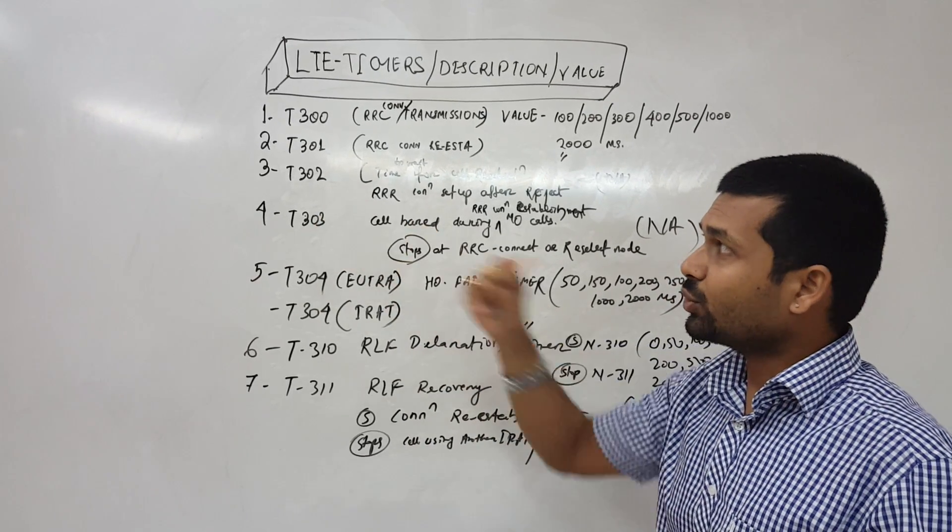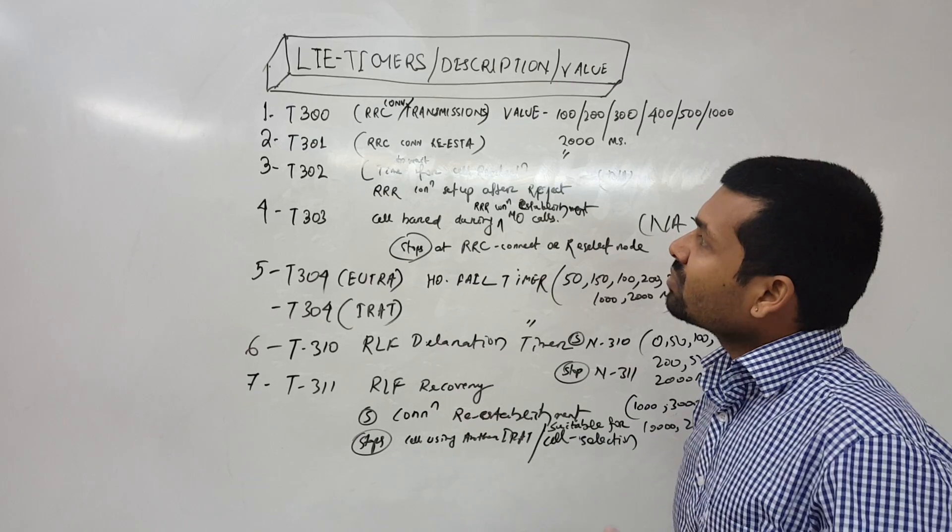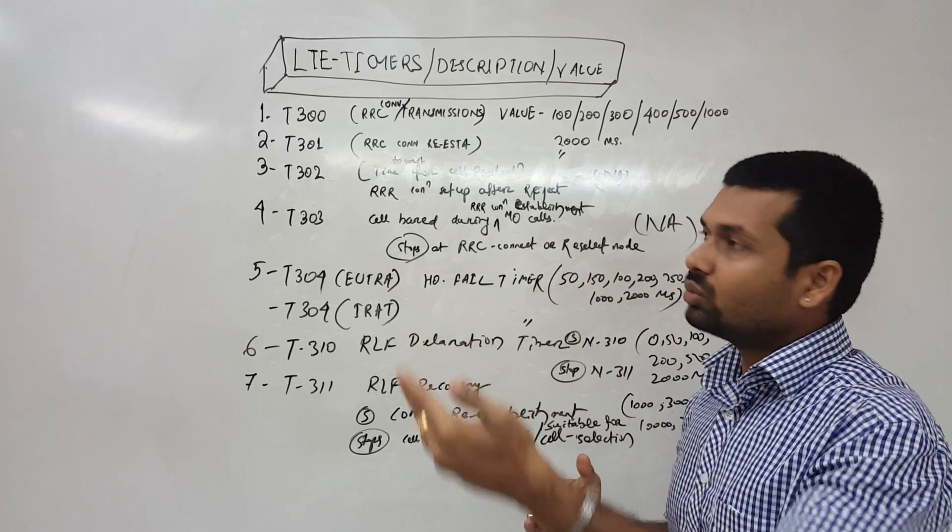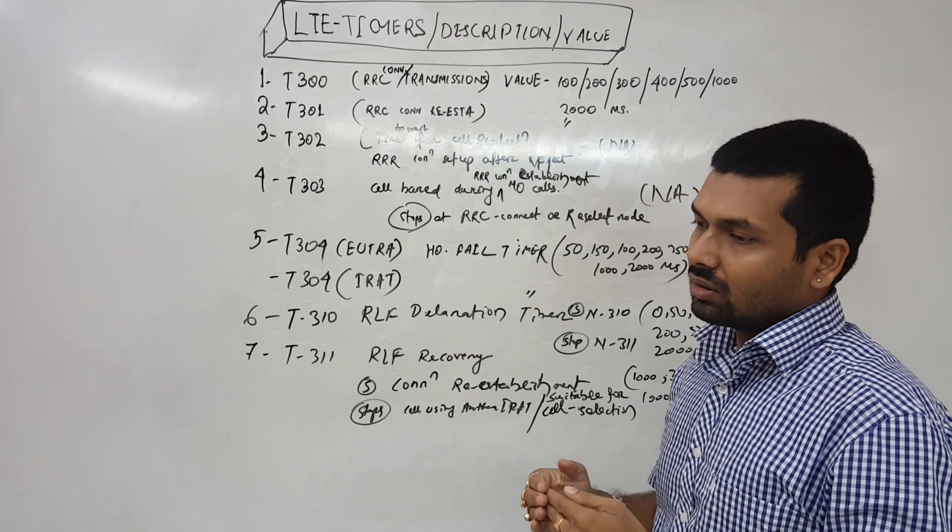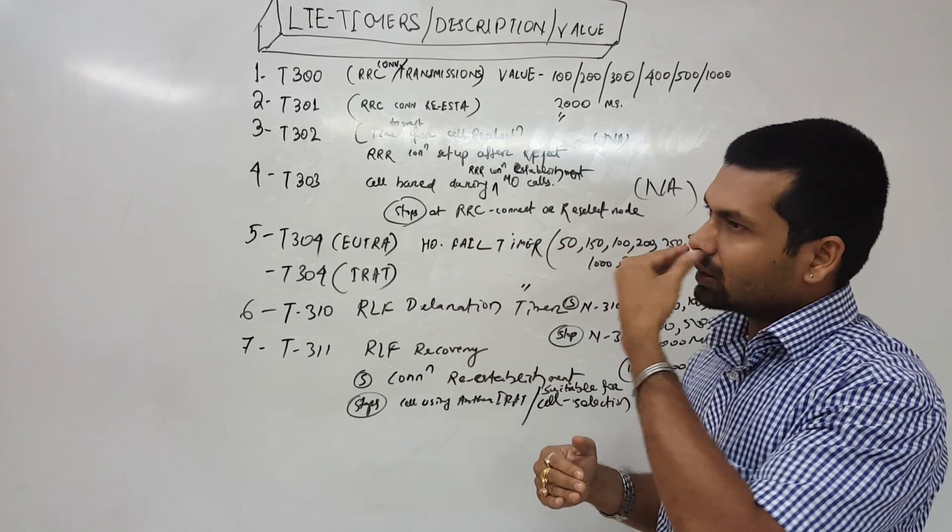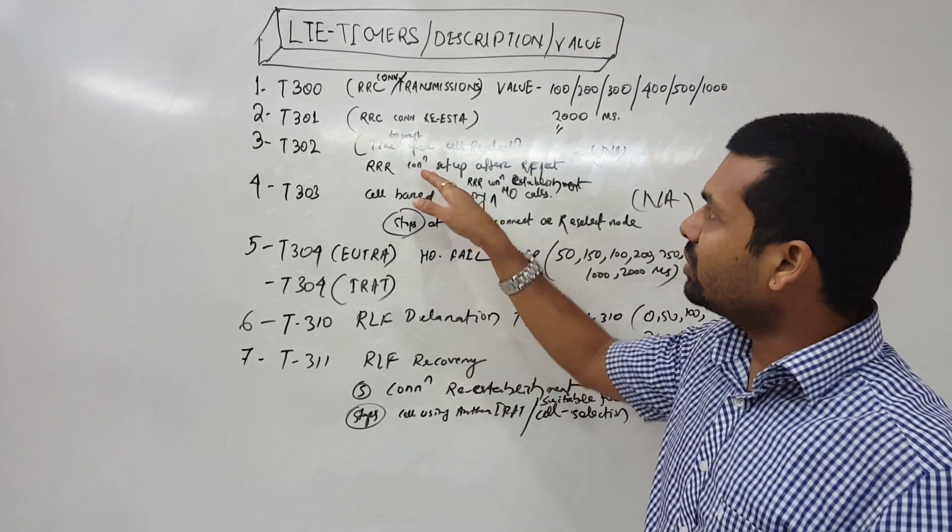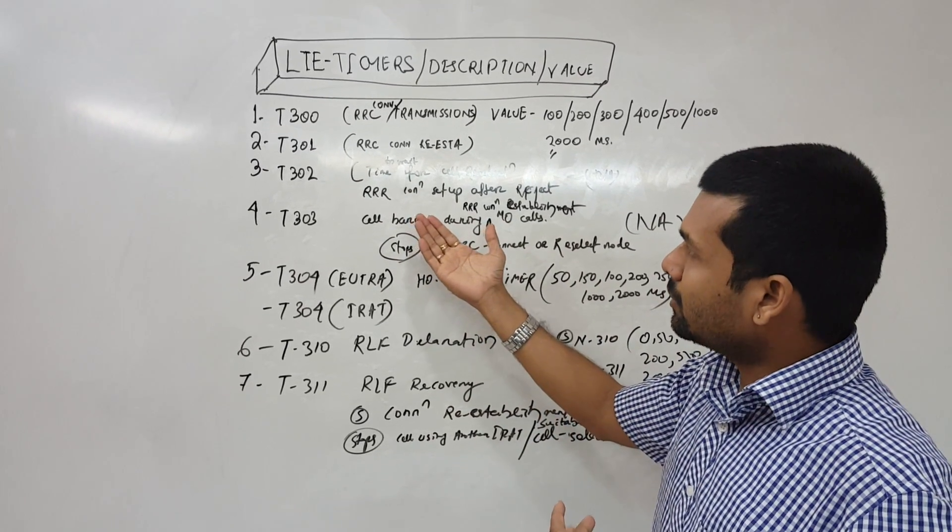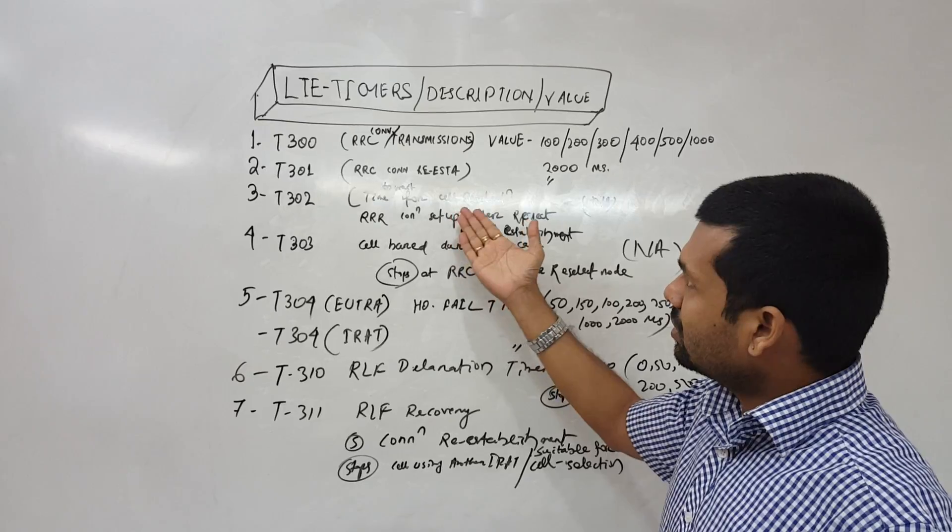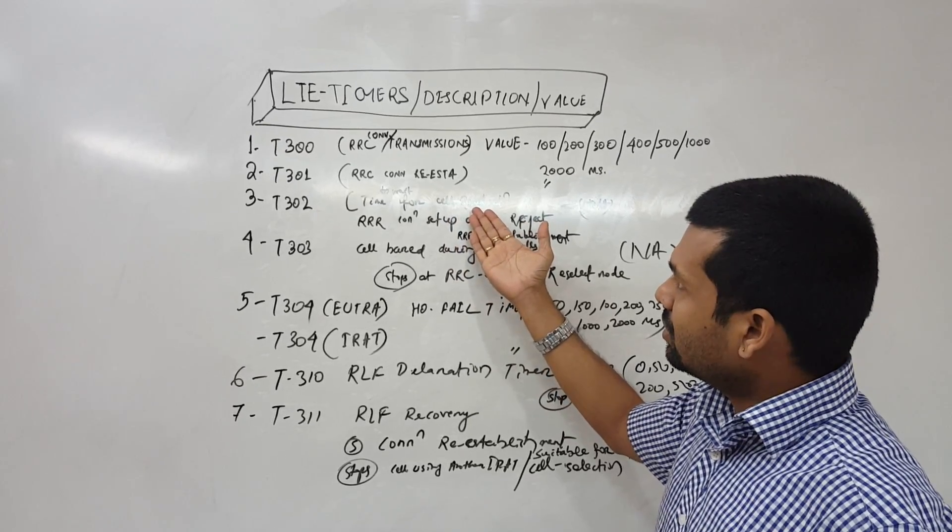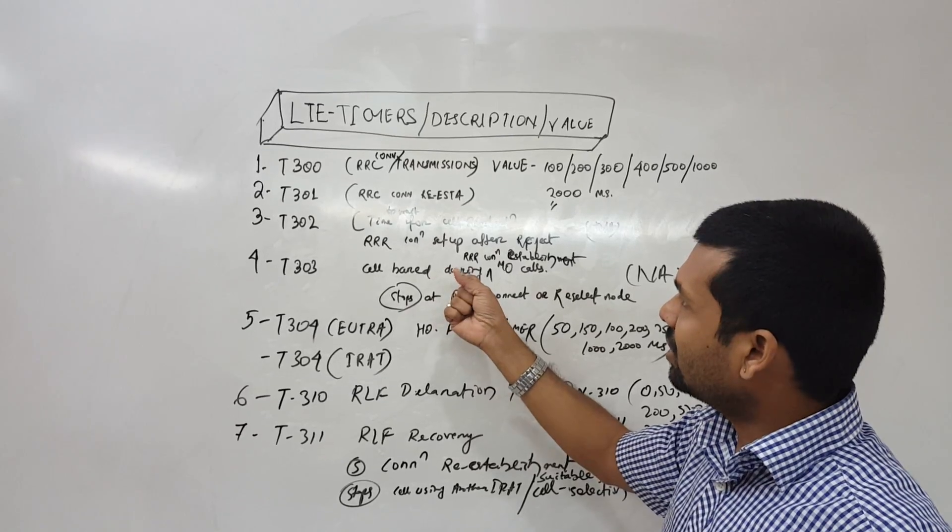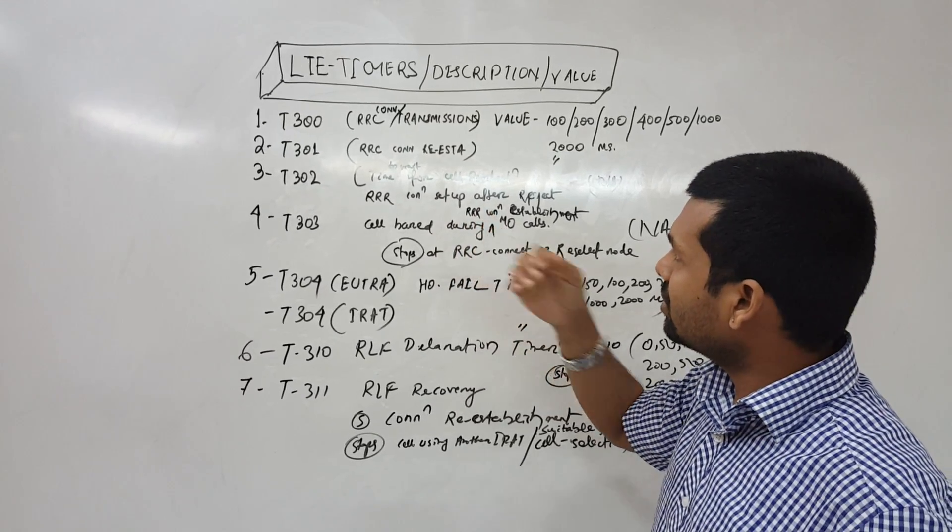Then timer T302, the third timer. This is time to wait till we try to connect to the network. It is time to wait for cell reselection.